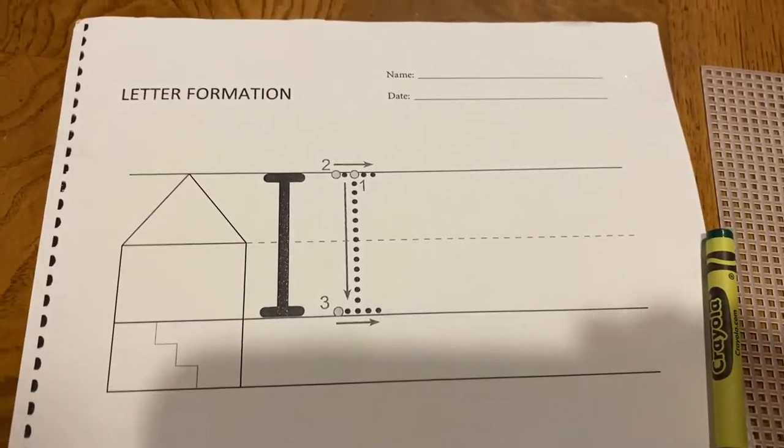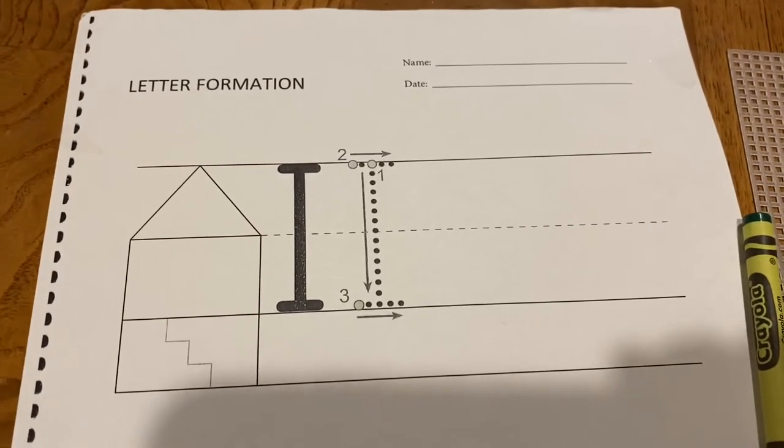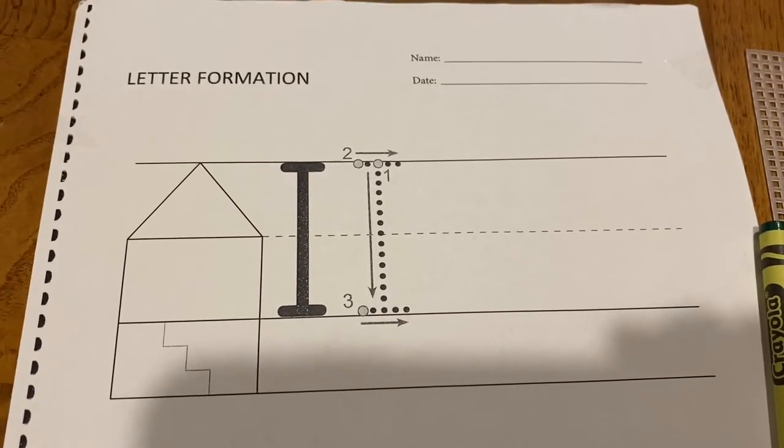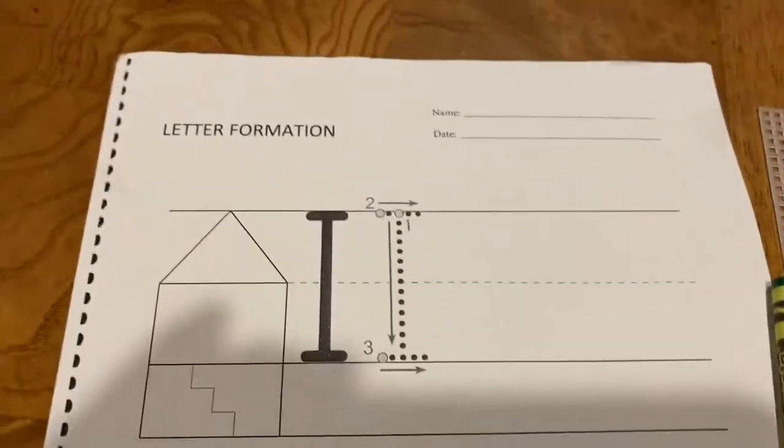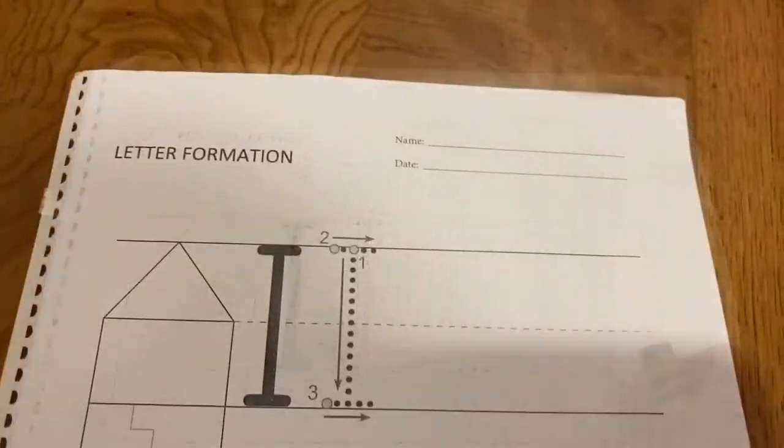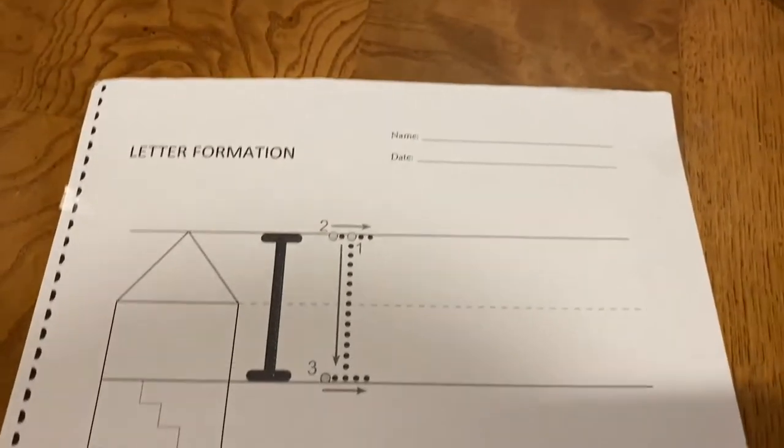Hi kindergartners, are you ready to write your uppercase I? Turn to page 37 in your green handwriting book. Get out your bumpy screen and get out your green crayon. Take your bumpy screen and put it behind page 37.